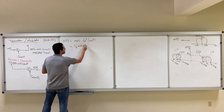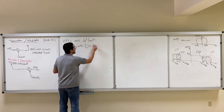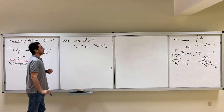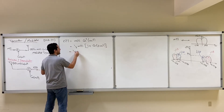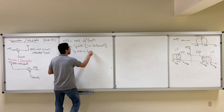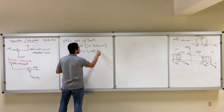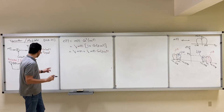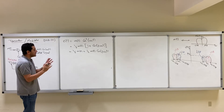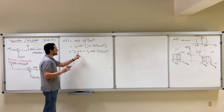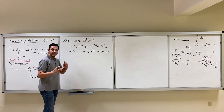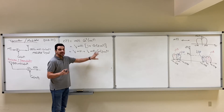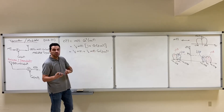We can use the trigonometric identity: cos²(ωct) = ½(1 + cos(2ωct)). Expanding, we get E(t) = ½M(t) + ½M(t)cos(2ωct). We started to recover M(t), our information signal, but there is also an undesired component: ½M(t)cos(2ωct).